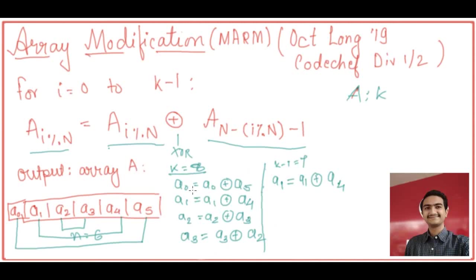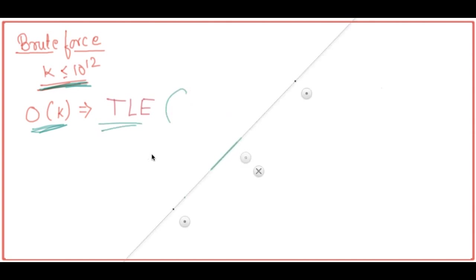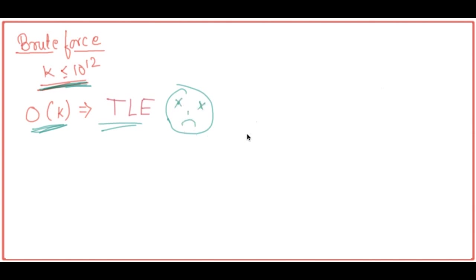So this was the question and we have to output the final array after K operations. If you haven't solved this question, I'd suggest pausing the video and trying it. Now let's discuss: if we think of a brute force approach, we iterate from i equal to 0 to K minus 1. But K is of the order 10 raised to power 12, so your solution would be O(K) and will definitely give you a TLE.